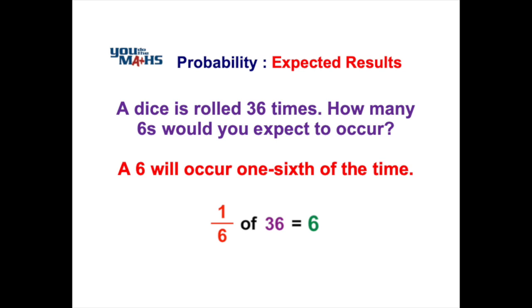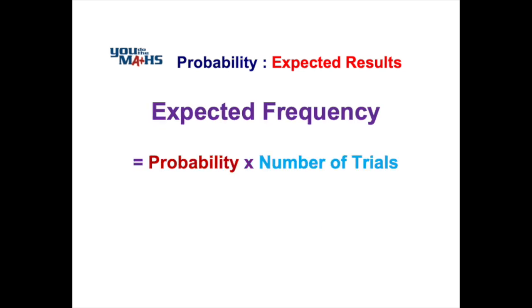A formula to summarize that is the expected number of times for something to occur, or the expected frequency, is its probability multiplied by the total number of trials, in other words how many times we rolled the dice.